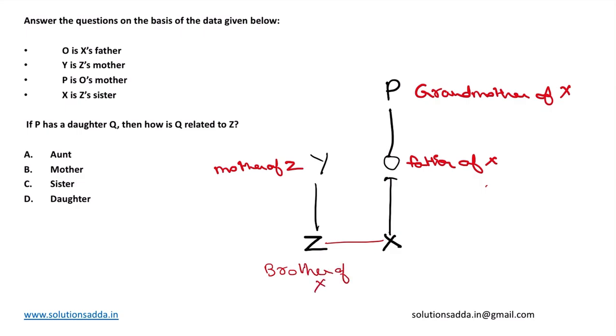When X and Z are brother and sisters, therefore Y and O will be husband and wife. So Y is wife of O.